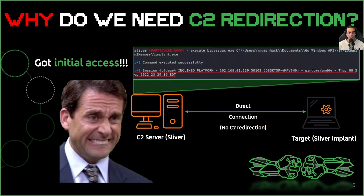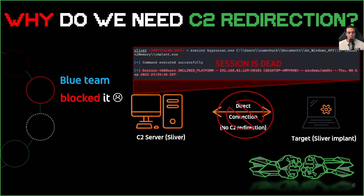So we managed to get initial access to our target's network through a compromised endpoint or server with internet access. For now, let's imagine we did not listen to our red team lead and we went ahead and configured our payloads to connect directly to a C2 server — big no-no. So let's say that incident responder Gary got an alert that reads something like: multi-stage incident involving command and control on endpoints.